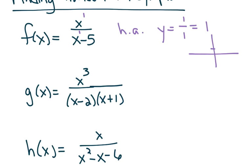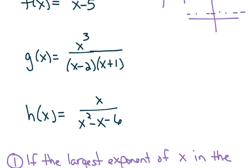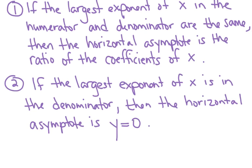Looking at g of x, the largest exponent of x in the numerator is 3, but the largest exponent in the denominator is 2 — because if you were to FOIL the denominator, the first term would be x squared. In h of x, the largest exponent in the numerator is 1 and in the denominator is 2, so they're not the same either. The next rule: if the largest exponent of x is in the denominator, then the horizontal asymptote is y equals 0 — that means it's the x-axis.